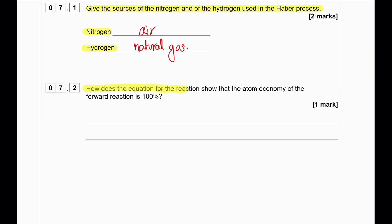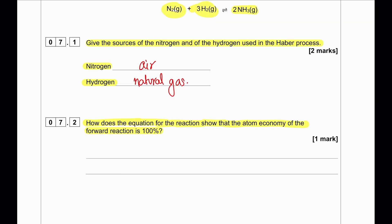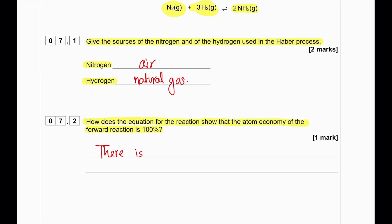How does the equation for the reaction show that the atom economy of the forward reaction is 100%? The equation shows that there is only one product.